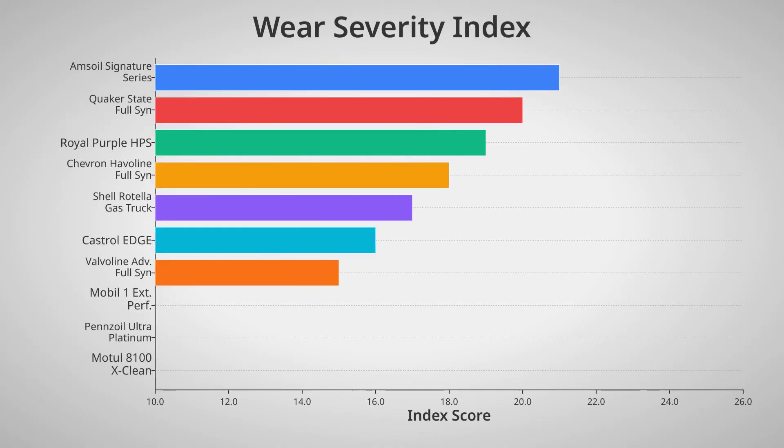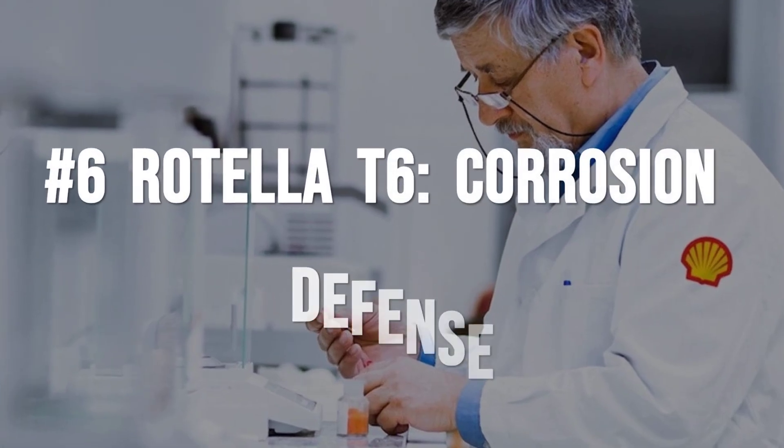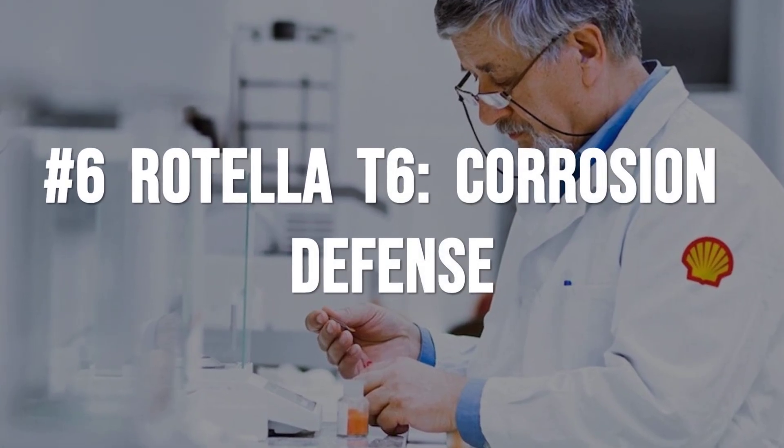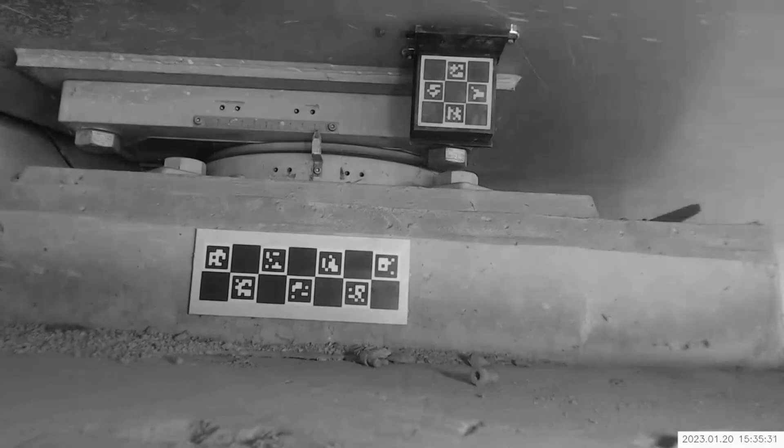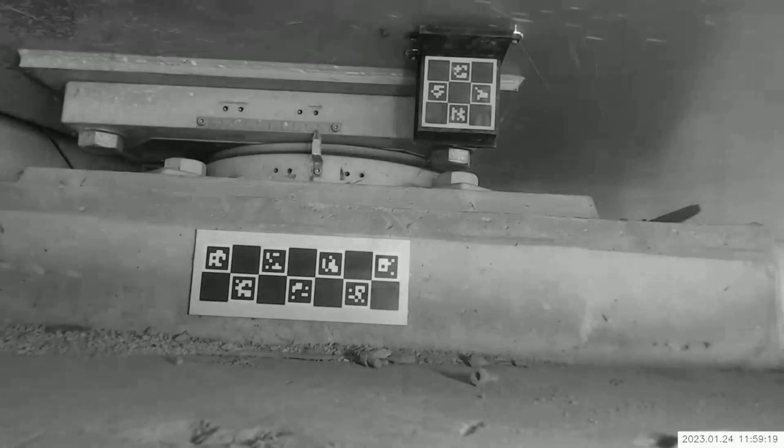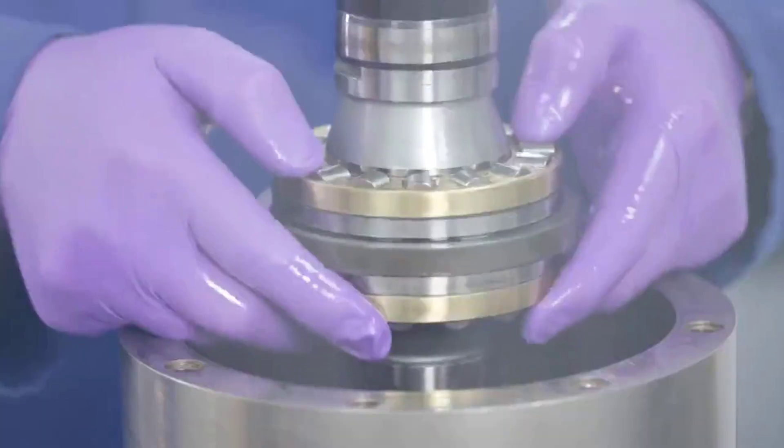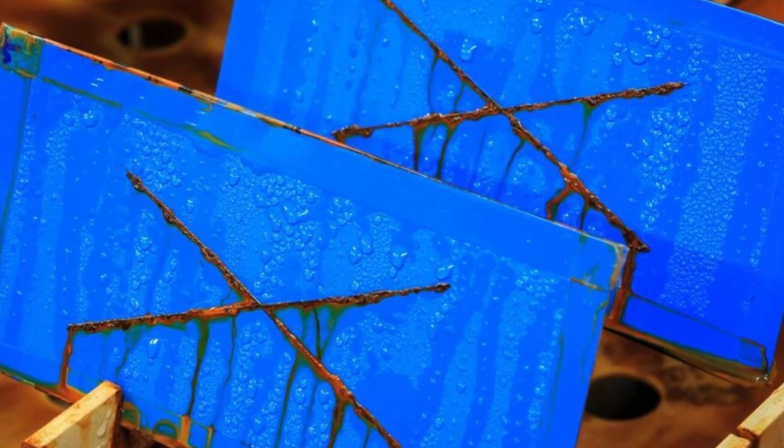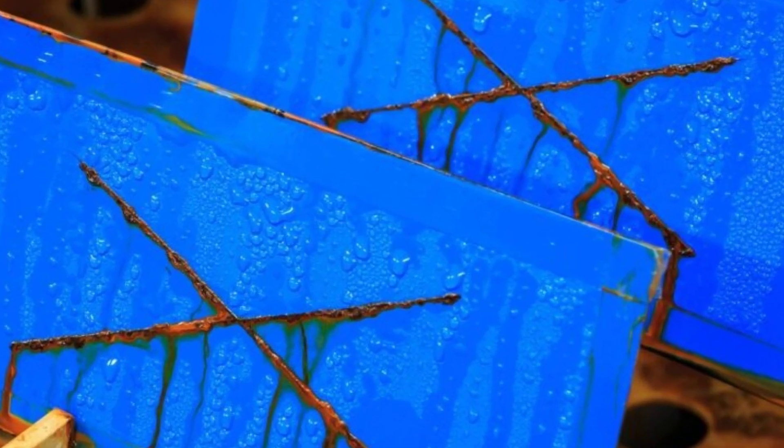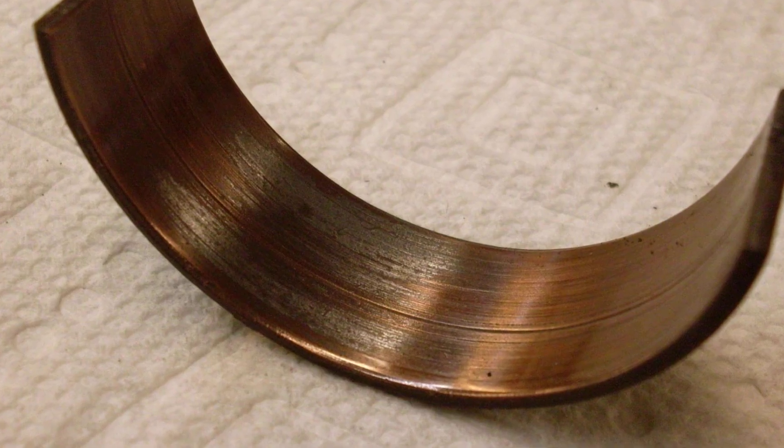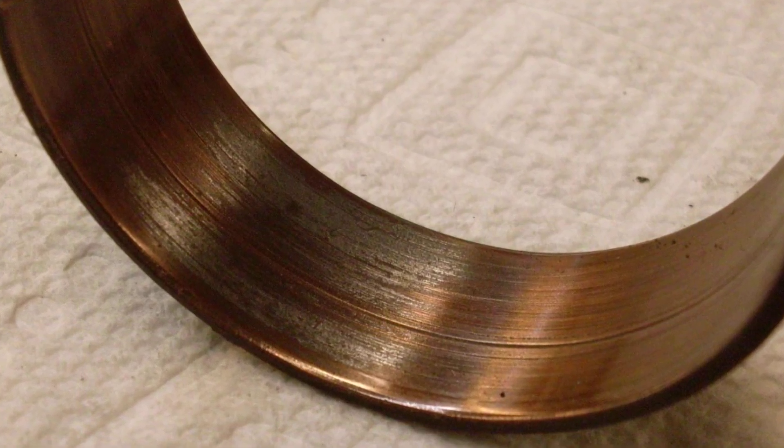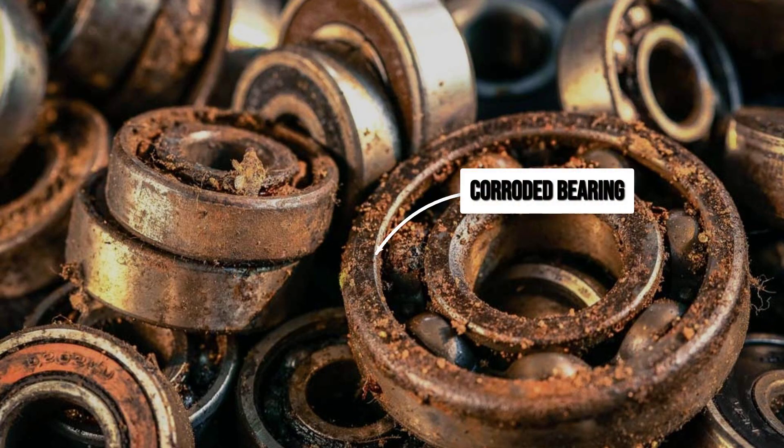Shell Rotella T6 stands out in the world of heavy duty oils for its proven defense against bearing corrosion, a threat that quietly destroys engines from the inside out. In the Sequence 8 test, oils are pushed to their limits under acidic conditions that mimic real combustion byproducts, with microscopic scoring on bearings measured after hours of punishment.